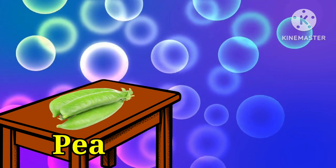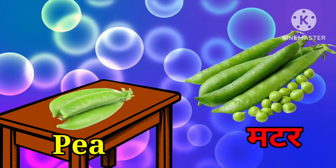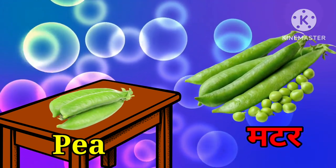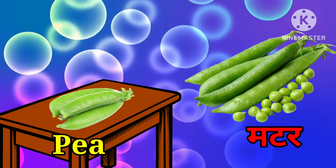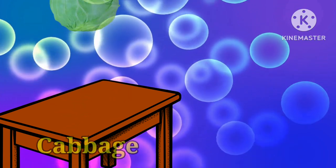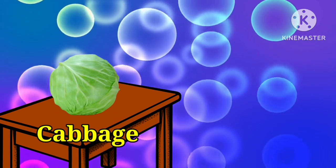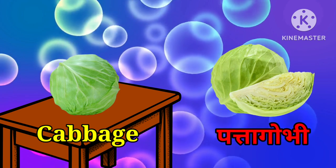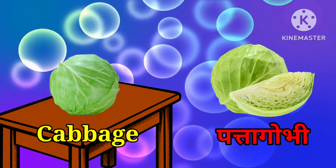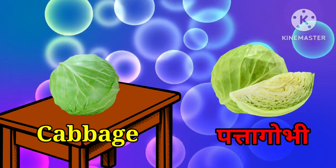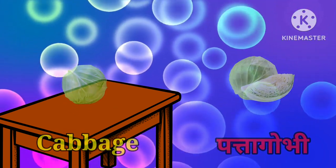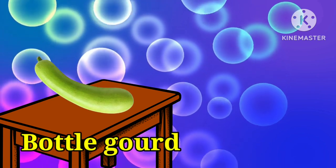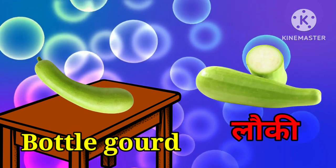Pea means mutter. One more time, it's pea. Cabbage means patta gobi. Once more, it's cabbage.